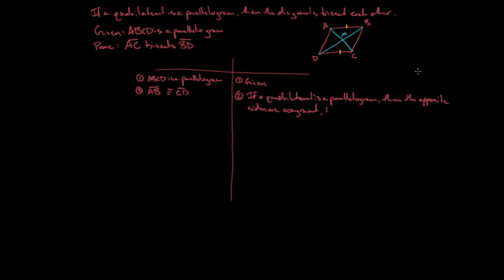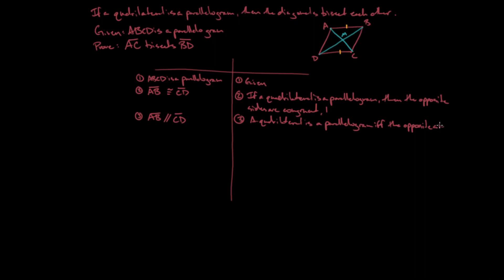Now let's also talk about the fact that these sides are parallel. This comes from my definition — not a theorem. AB is parallel to CD, by the definition of a parallelogram: a quadrilateral is a parallelogram if and only if the opposite sides are parallel. That also comes from statement 1.